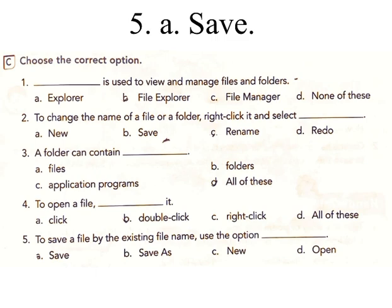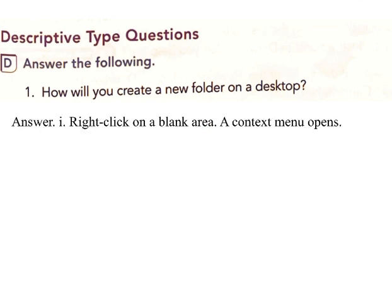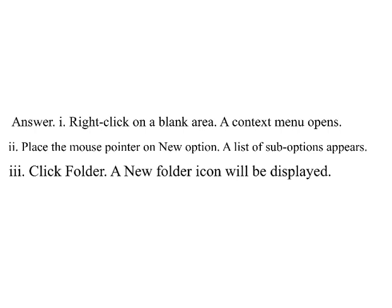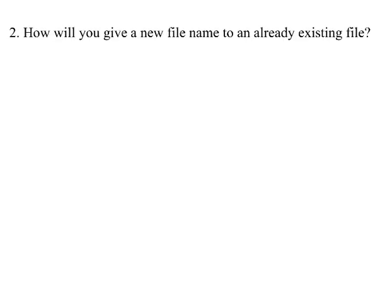Answer: a) Save. D: Descriptive Type Questions — Answer the following. 1. How will you create a new folder on the desktop? Answer: i) Right-click on a blank area; a context menu opens. ii) Place the mouse pointer on New; a list of sub-options appears. iii) Click Folder. A new folder icon will be displayed. Type a name for the folder and press the Enter key.